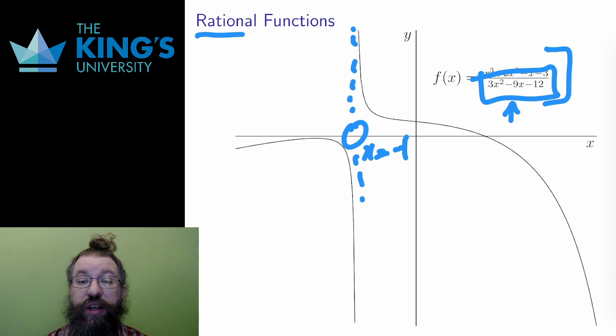You can also see in the diagram the behavior of functions near the undefined point. The function becomes very steep. As I get close to x equals negative 1, the function gets very close to the vertical line x equals negative 1.